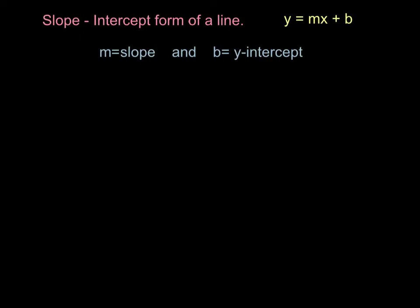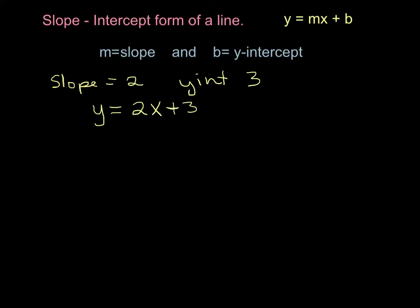Let's look at a couple of examples. The first example says: write the equation of a line that has a slope of 2 and a y-intercept of 3. That allows us to write down the equation y equals 2 — because that's our slope, that's what goes in the place of m — then we put an x there, and plus 3. So the equation of the line in slope-intercept form is y = 2x + 3, where the slope is 2 and the intercept is 3.